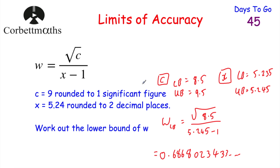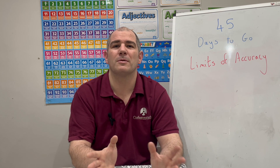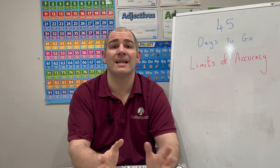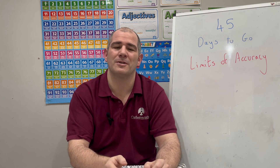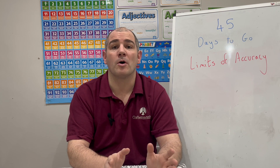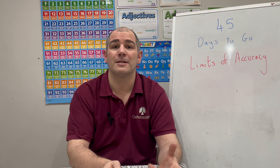In this video we've gone through three limits of accuracy type questions. I'd highly recommend having a look at the practice questions, because on the Corbett Maths practice questions there are loads of different limits of accuracy questions where the context may change slightly, so it'll be very useful. There are 45 days to go to your GCSE exam, so keep up the hard work — you're doing fantastically well. The next video will be out tomorrow at three o'clock on YouTube, so I'll see you tomorrow. Cheers, bye.